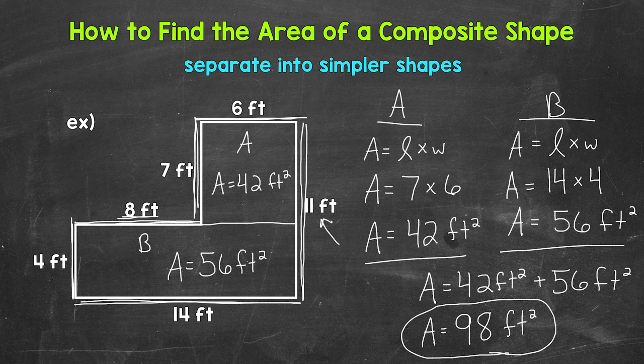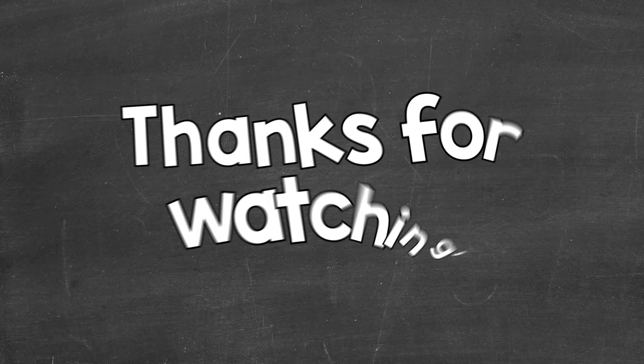So there you have it — that's how to find the perimeter and area of a composite shape. I hope that helped. Thanks so much for watching. Until next time, peace.